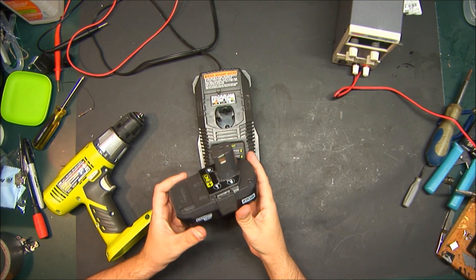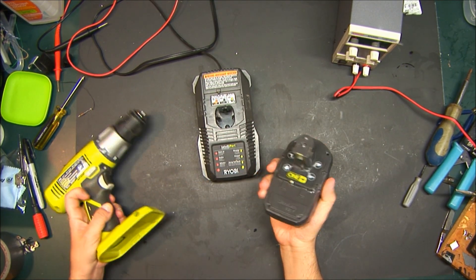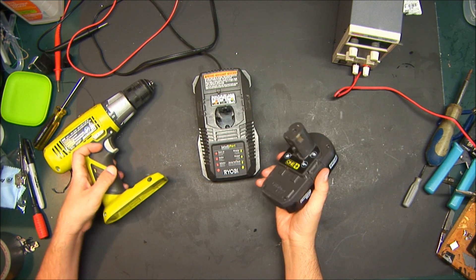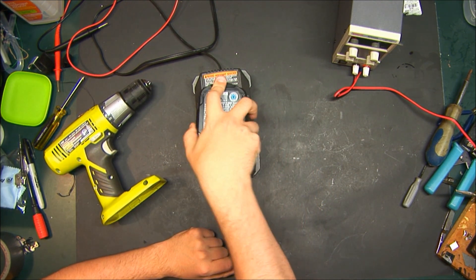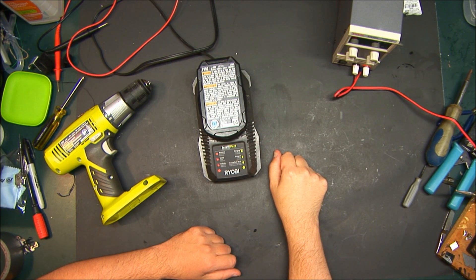So this is a Ryobi battery pack, an 18-volt lithium that goes to multiple things, but in this case a drill. Recently, when we plugged it into the charger, nothing happens.